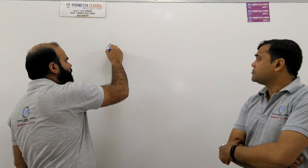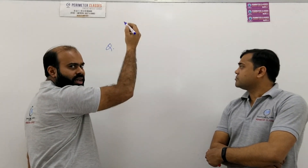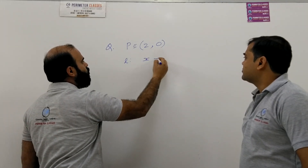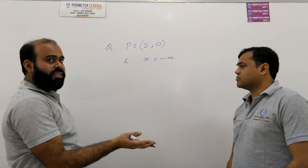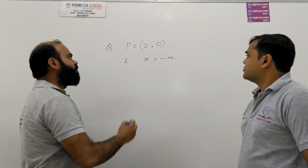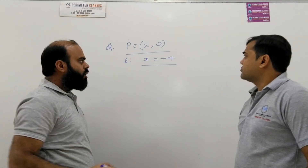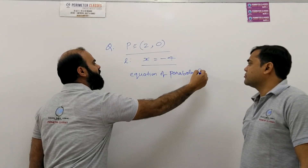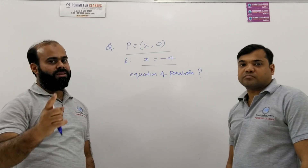Now I give you a practice question to attempt before the next lecture. There is a point (2, 0) which is the focus, and a line x = −4 which is the directrix. This is a shifted parabola — the vertex is not at the origin. Using the knowledge you have gathered here, can you find the equation of this parabola and draw its graph?